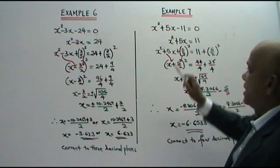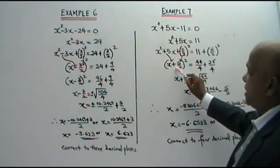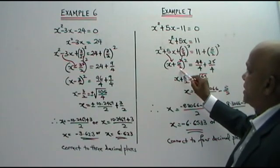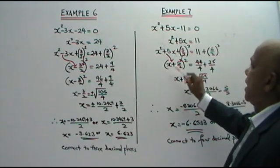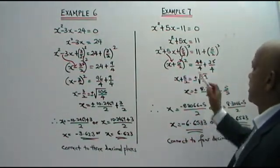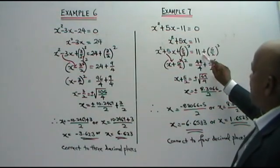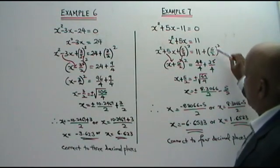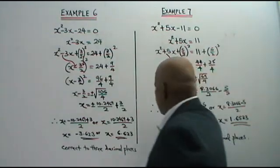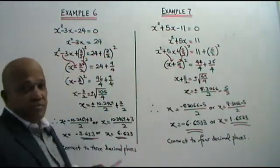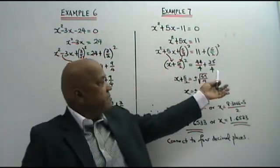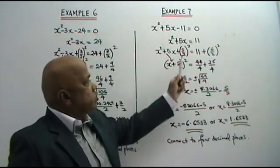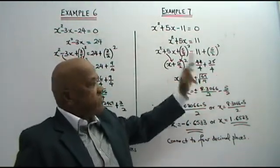Now you have completed the square. You look at this sign — plus. So this sign will be plus in this bracket. Bring it down: 5 over 2, you bring it down here. So this is equal to x plus 5 over 2, squared, equals to 11 times 4 — 44. So 44 over 4 plus 25 over 4. You get x plus 5 over 2, squared, equals to 69 over 4.